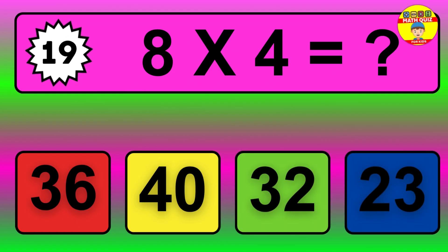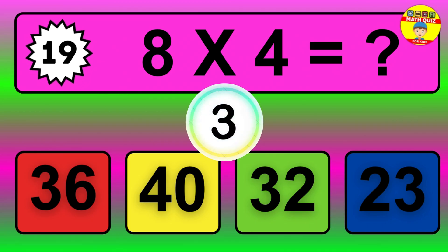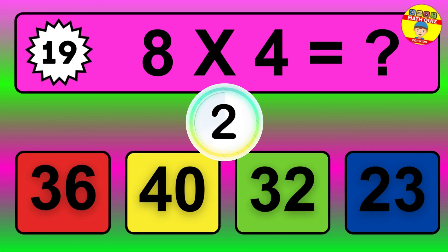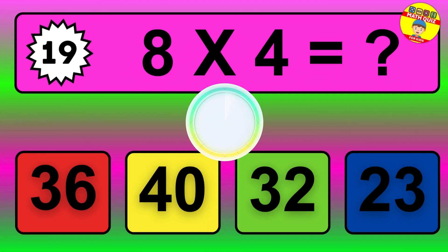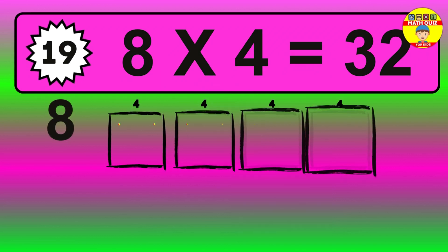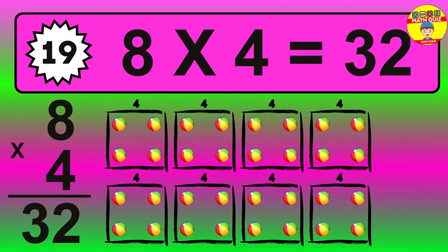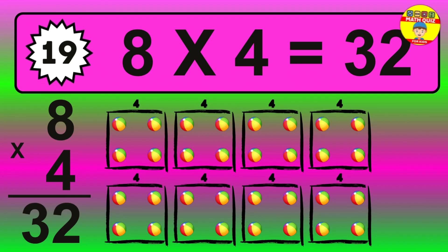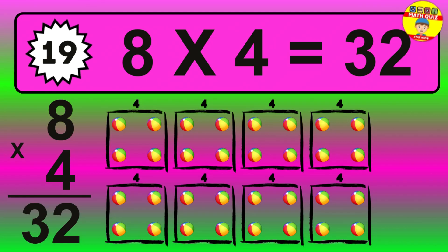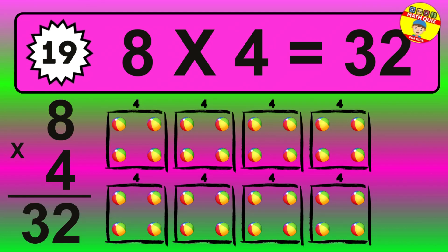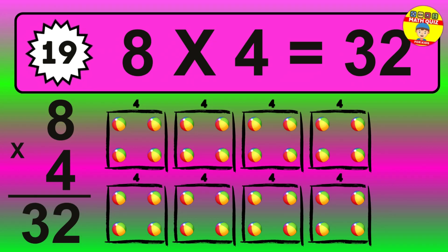Question 19. 8 times 4 equals what? The answer is 8 times 4 is 32. To calculate, we have 8 groups with 4 balls each one. So, how many balls do we have? 32 balls.